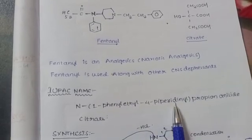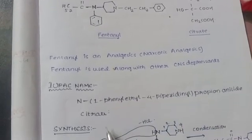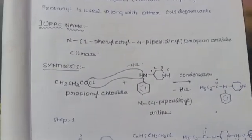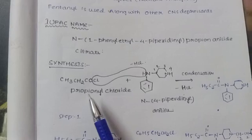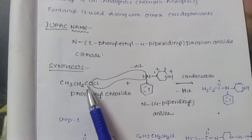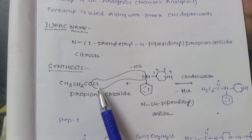Now we are going to discuss the synthesis. First, propionyl chloride, which is 1-2-3-propanoyl chloride, is going to react with N-4-piperidine aniline.